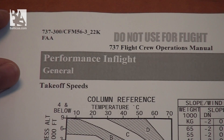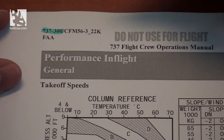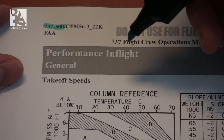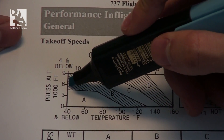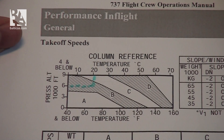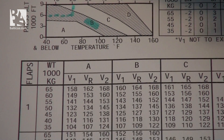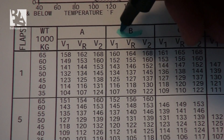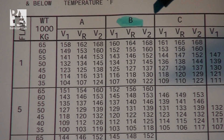Let's first look at the 737. We identify the chart as the takeoff speed chart for the 737-300. Then we go into the column reference table — we have to check our temperature against our pressure altitude. Let's say we have 6,000 feet of pressure altitude at our airfield and 20 degrees centigrade of temperature. This puts us into the B column. Knowing this, we go downwards into the B column, situated right here, and find our weight against our flap setting.